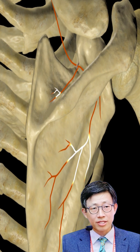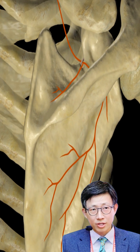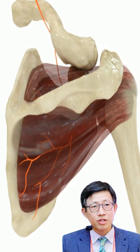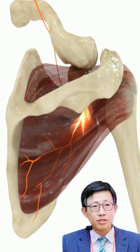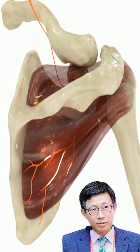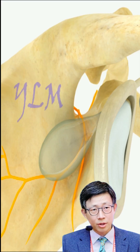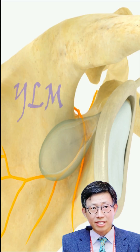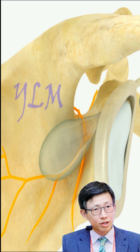The suprascapular nerve is a nerve that runs through the shoulder and provides motor function to two of the muscles in the rotator cuff. A suprascapular ganglion is a type of ganglion cyst that forms near the suprascapular nerve.